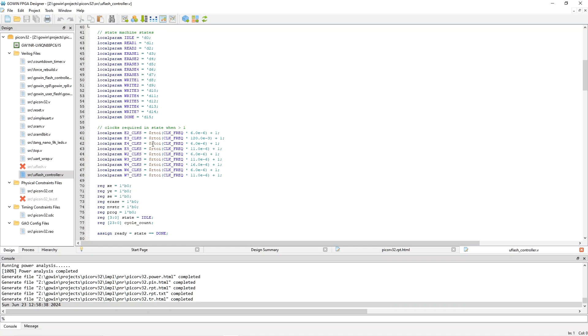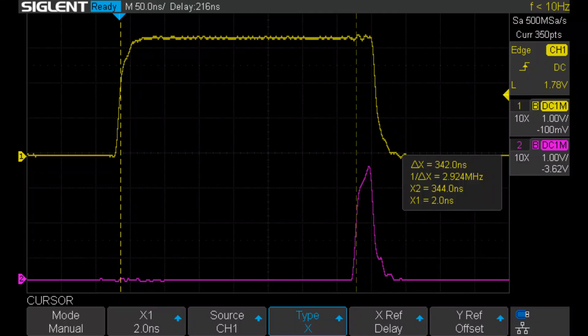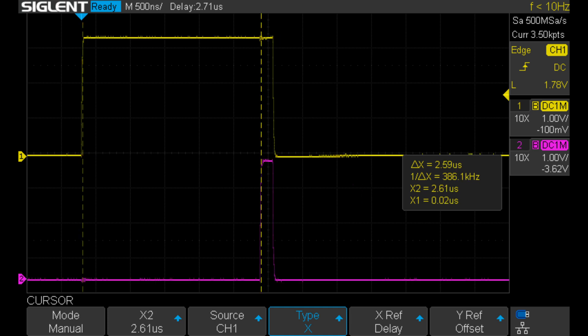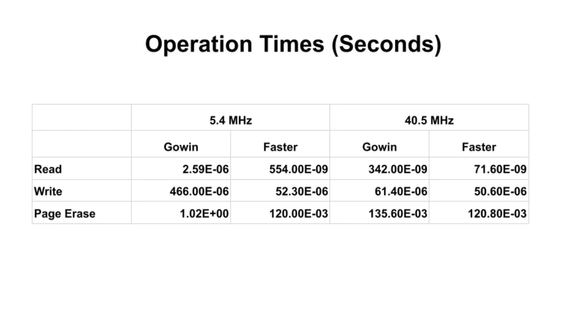Next we'll look at some summarized performance results. I measured by reflecting the select and ready signals on external pins. This is the Gowen controller at 40.5 megahertz doing a read — the time delta X is 342 nanoseconds. At 5.4 megahertz, the read time increased a lot to 2.59 microseconds, due to the lack of clock speed parameterization in the Gowen module. Here are the operation times in seconds for reads, writes, and page erases at both 5.4 megahertz and 40.5 megahertz for both controllers, but these numbers are hard to read so I created a normalized plot.